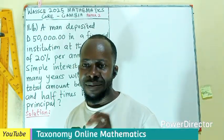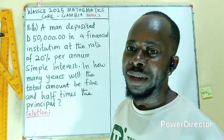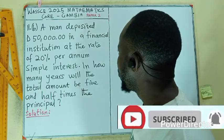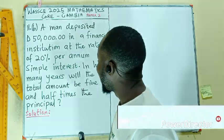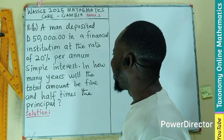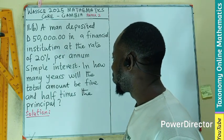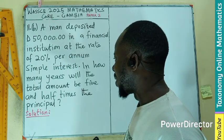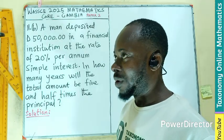Welcome to question 11b, the continuation of the Gambia General Mathematics 2025. A man deposited 50,000 — in a Gambian dollar — in a financial institution at the rate of 20 percent per annum simple interest. In how many years would the total amount be five and a half times the principal?